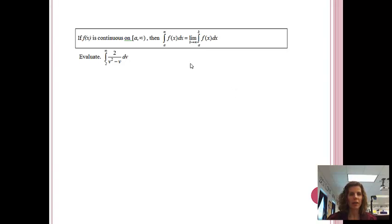We are going to be dealing with this formula. If f of x is continuous on the interval from a to infinity, then the integral from a to infinity of a function is actually going to turn into a limit as b approaches infinity of the integral from a to b of f of x. That looks probably pretty confusing, so I'm going to try to help clarify that for you.